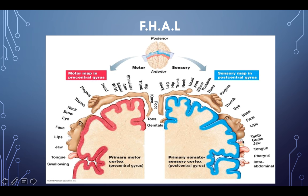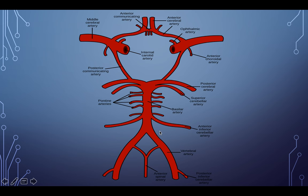The reason FHAL is important is that when stimulating different areas of the brain, we use different areas of the body. If there's a cortical lesion in the area responsible for hand sensation or motor control, we stimulate the hand to target that brain region. This will make more sense when we look at vascular supply — FHAL: Face, Hand, Arm, Leg.